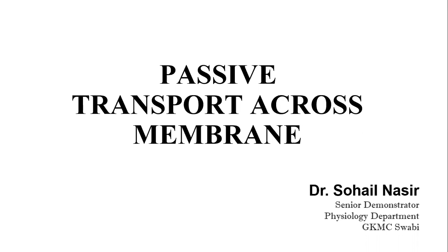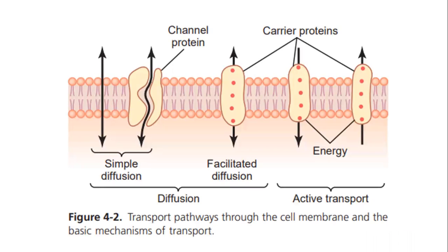There are different types of transport mechanisms in the cell, in which substances move inside and outside. There are two types: one is active transport and the other is passive transport. In passive transport, there is no requirement of energy. It depends on the concentration gradient, and kinetic energy is used in the process.